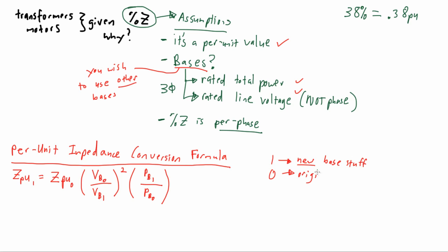Just to review what has been written here, if you notice our Z impedance with a per unit subscript, and then we have a further subscript with a 1 and a 0, the 1 is the newest base you're trying to get to. It's the one you're converting to, and the 0 is the original base.